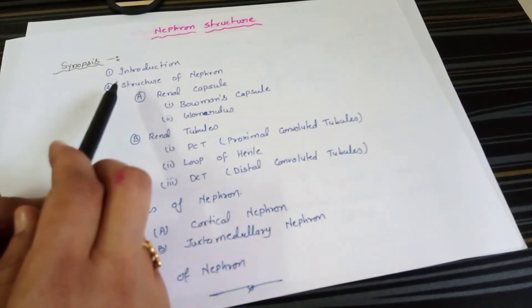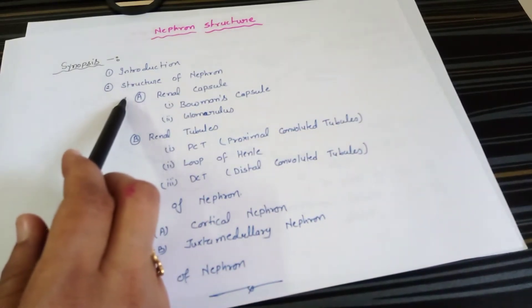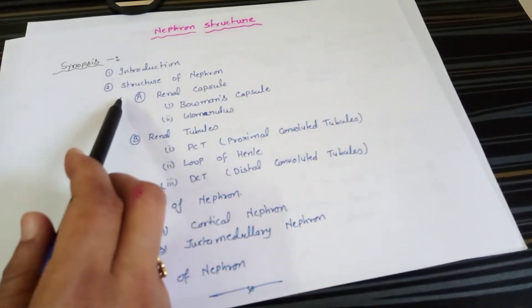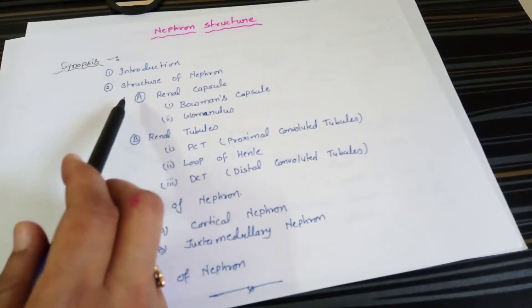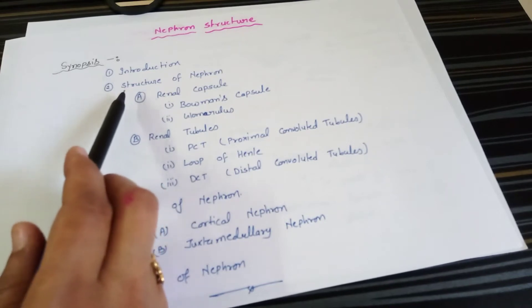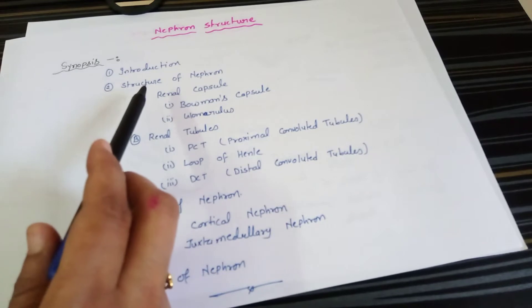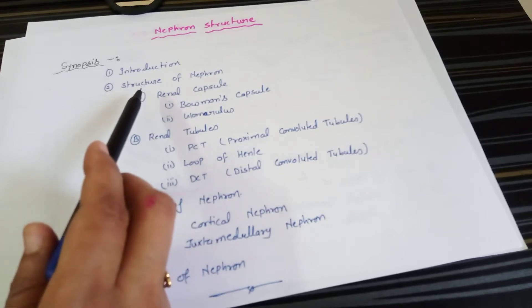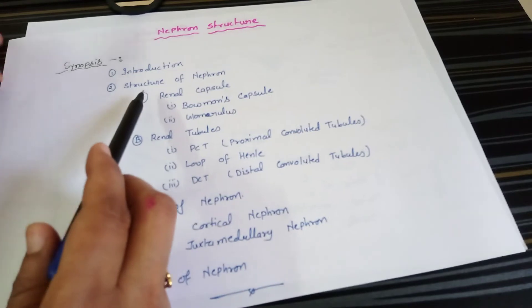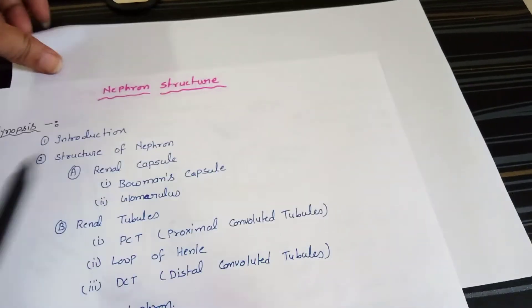In the introduction you have to write something about the kidney and the definition of the nephron. The kidney is made up of millions of filtering units called nephrons, and each nephron includes a filter called the glomerulus.